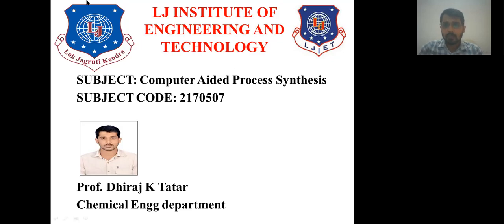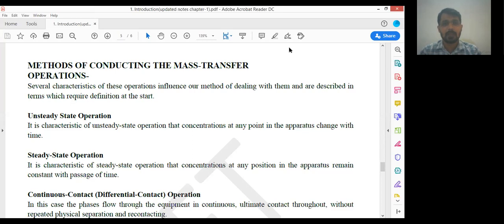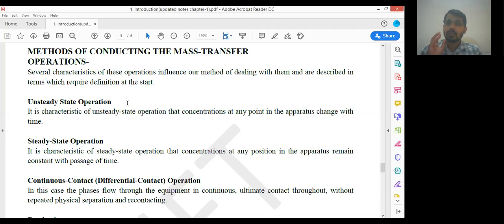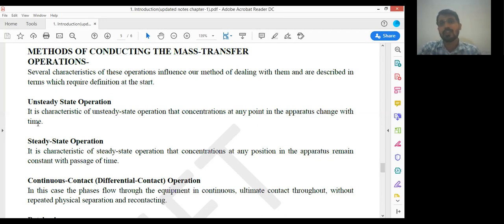There are some methods of conducting mass transfer operations. Several characteristics of this operation influence our methods of dealing with them and are described in terms which require definition. The first one is unsteady state operation. The characteristic of unsteady state operation is that concentrations at any point in the apparatus change with time — for example, temperature or composition of any component changes with time. If there is a change with time, that operation is unsteady state in nature.